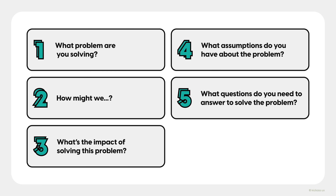Step five: list out all of the questions you need to answer to properly solve the problem. What don't you know about the problem? What do you need to learn to be able to move forward? These questions form the basis for your research. Using the same Airbnb example, maybe you're uncertain whether people would actually communicate within Airbnb or if they'd use outside methods like email or text. That would become a question to answer through research, helping you figure out whether or not you need to build an internal chat tool for planning a trip.